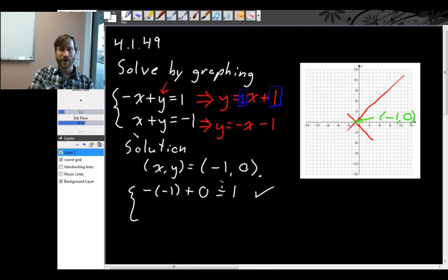And then for the other equation, x plus y equals minus 1, we get minus 1, that's x, plus y, which is 0. Is that equal to minus 1? Yes. So this point that we got, minus 1, comma 0, really is a solution to the system of equations.